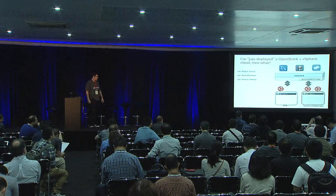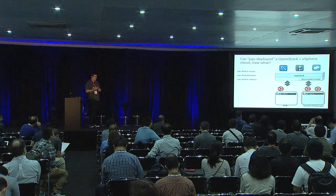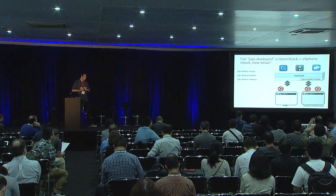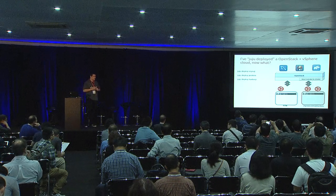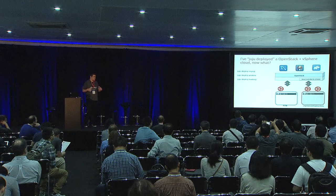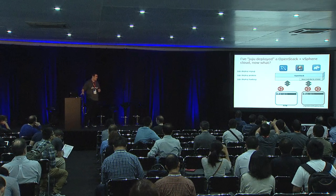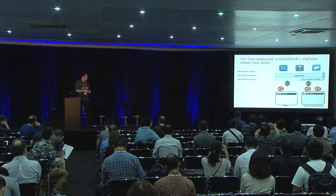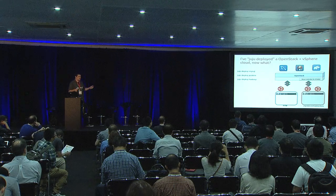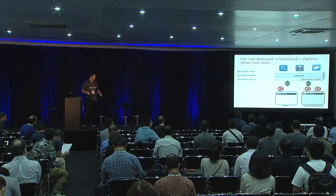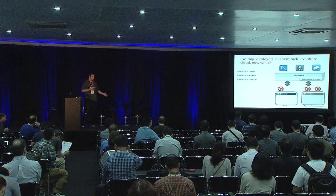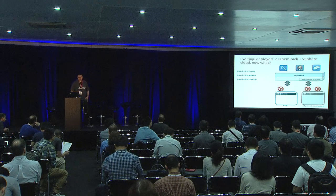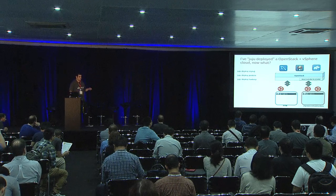Now that we've got an OpenStack cloud deployed using Juju and MAAS, what can we do with it that we weren't able to do before if we were just running a vCenter cloud on its own? Fortunately, with Juju, since its backend where it gets hardware is abstracted away, it's very easy to take the Juju tools you've used to deploy your OpenStack cloud and point them at the cloud itself, or give users of the cloud access to use Juju and start deploying workloads on top of that cloud.